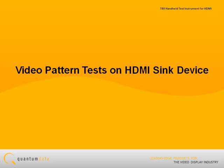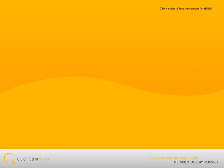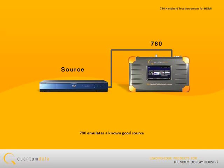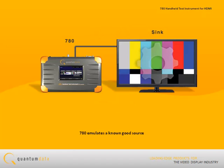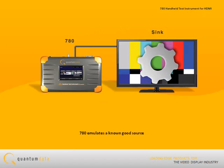Running video pattern tests on an HDMI sync device such as an HDTV. The 780 test instrument emulates a known good HDMI source device and enables you to run a variety of qualification tests on an HDMI display.